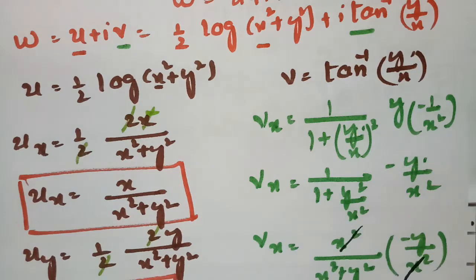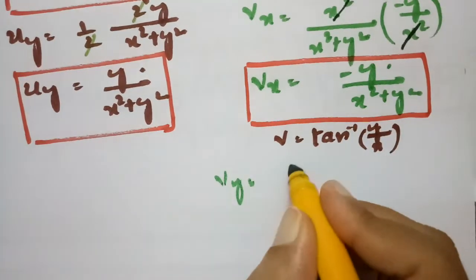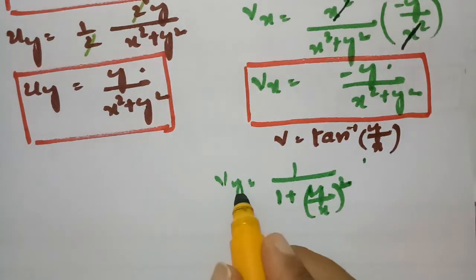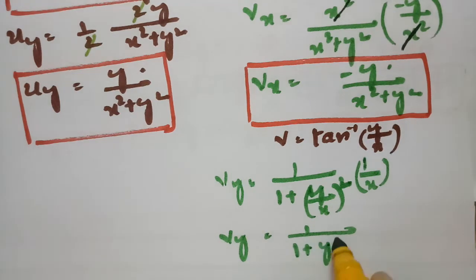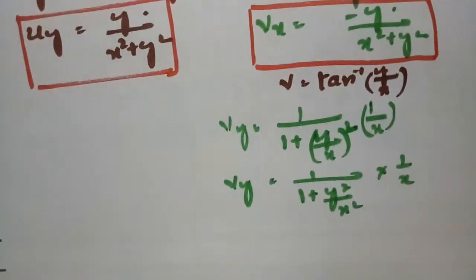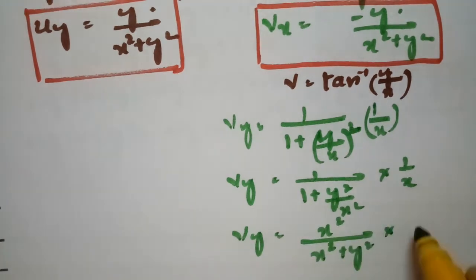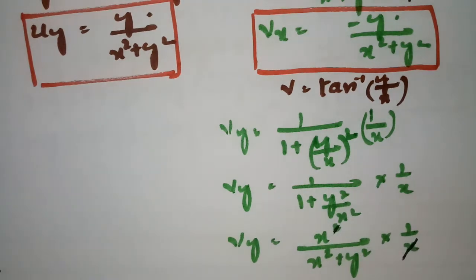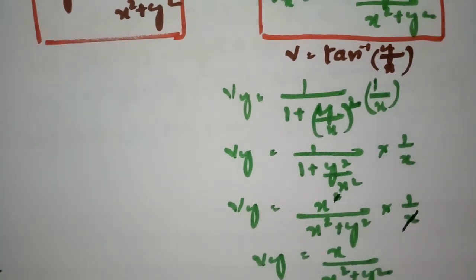Differentiating v = tan⁻¹(y/x) with respect to y. The derivative of y/x with respect to y is 1/x. So ∂v/∂y = (1/(1 + y²/x²))·(1/x) = (x²/(x² + y²))·(1/x) = x/(x² + y²).